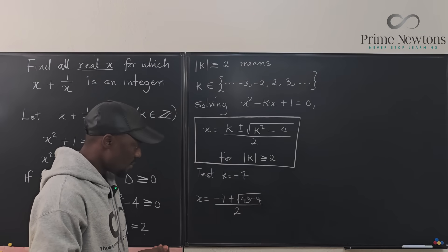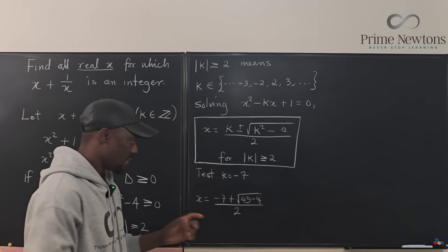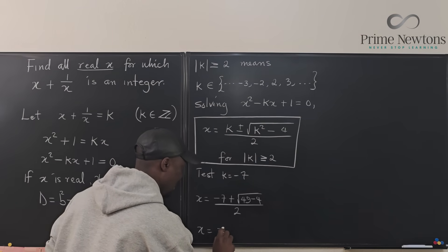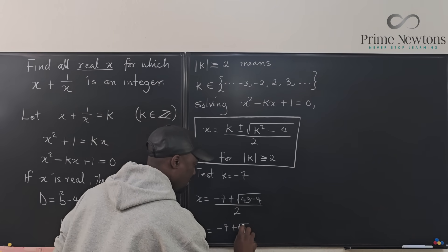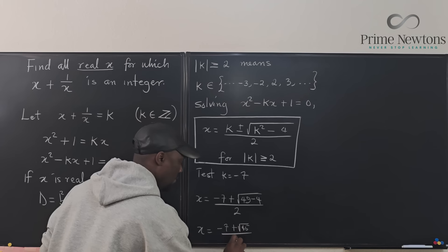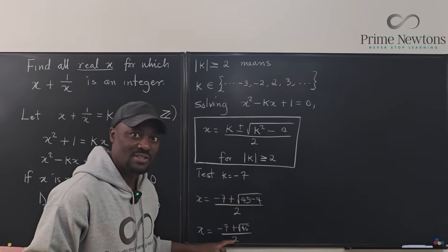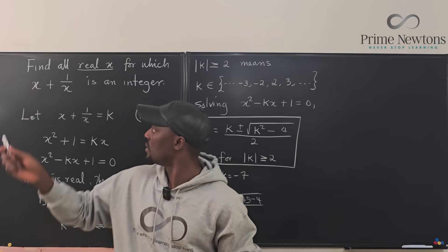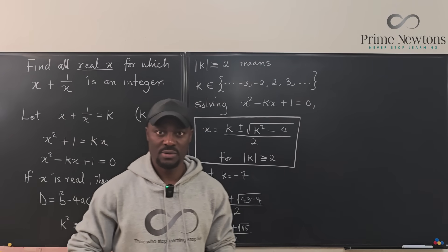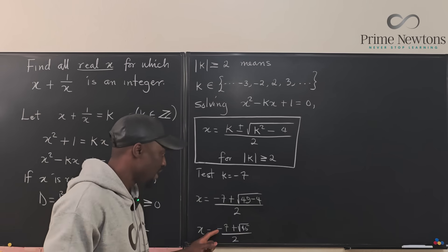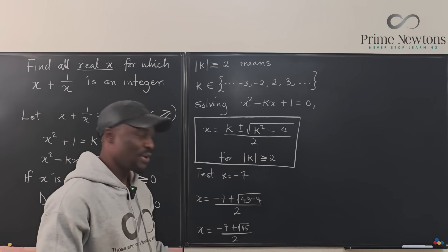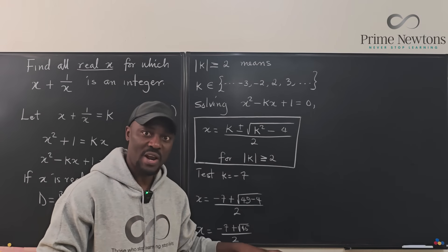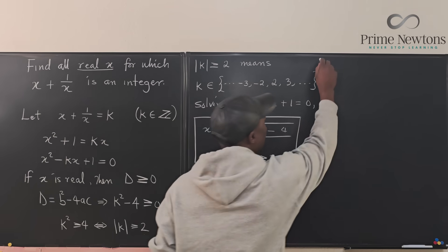Negative 7 plus the square root of 49 minus 4 divided by 2. So this is the same thing as x will be negative 7 plus square root of 45 over 2. So we want to show that if you add this number to its own reciprocal like this, you're going to get an integer always. So it doesn't matter what number you pick. As long as that number is in this set, you are going to have x plus 1 over x being an integer.